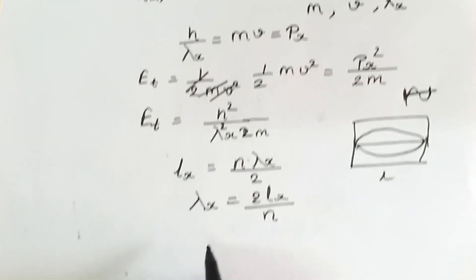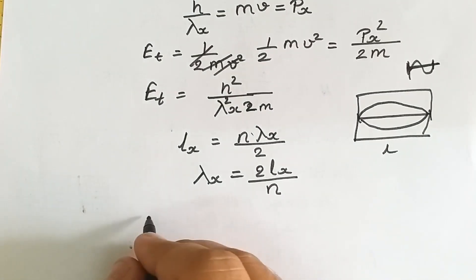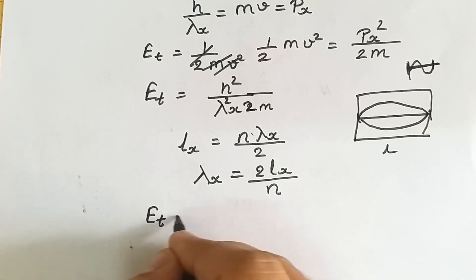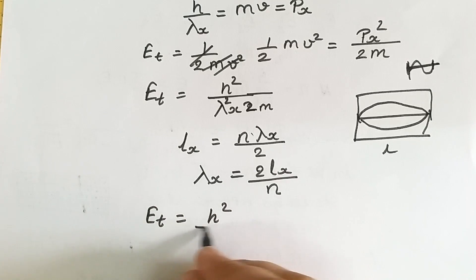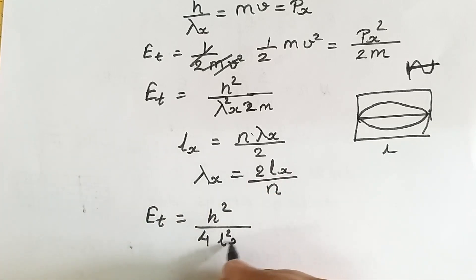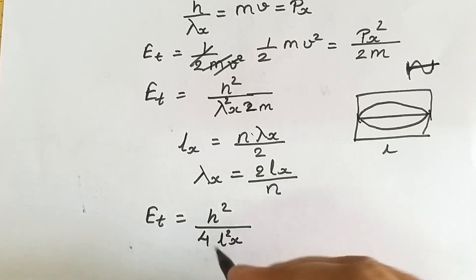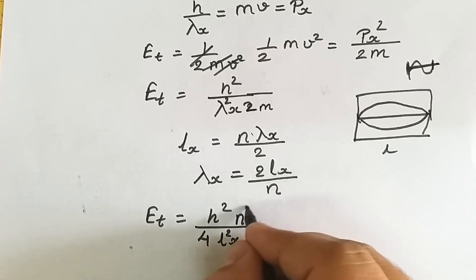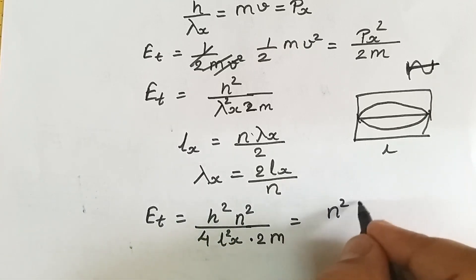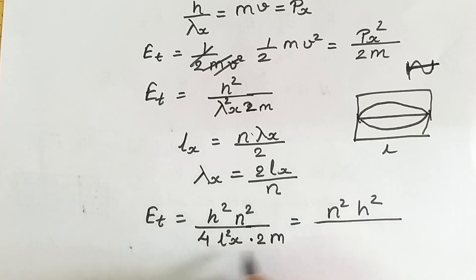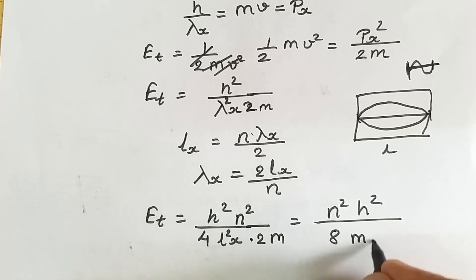We substitute this value of lambda_x into our energy equation. The result is: e_t equals h squared upon (2L_x/n) squared divided by 2m, which simplifies to n squared h squared upon 8mL_x squared. This is the energy associated with the particle performing translational motion.